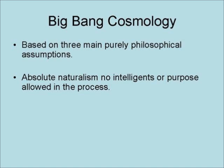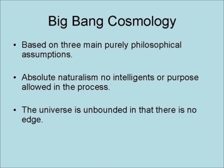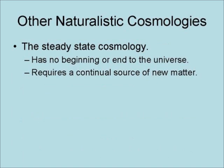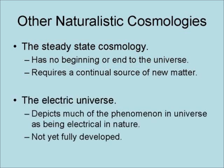The Big Bang cosmology is based on three main purely philosophical assumptions: absolute naturalism, which allows for no intelligence or purpose in the process; the universe is unbounded, meaning there is no edge — no point beyond which there is no matter; and the cosmological principle, which states that the universe looks the same from every place. It explains the fact that we seem to be at the center of the universe by making every place look like the center. There are other naturalistic cosmologies, such as the steady state cosmology, which has no beginning or end to the universe but requires a continual source of new matter. There is also the electric universe, which depicts much of the phenomenon in the universe as being electrical in nature.